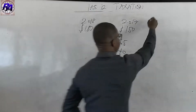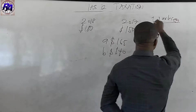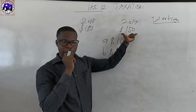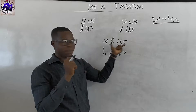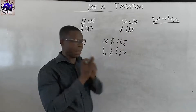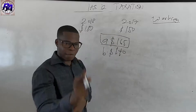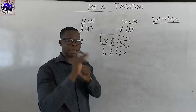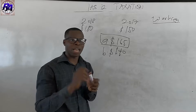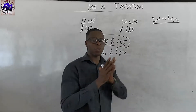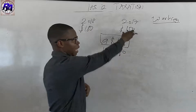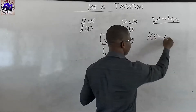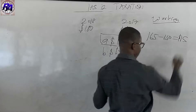Let's do our workings. We accounted for $150 tax in 2017, but what did we actually pay? $165. $150 is what we deducted as an expense, but $165 is what we actually paid. If that is the case, then we have under provided for tax — there was an under provision. Any time there is an under provision, we increase the new tax element with the difference. The difference is $165 minus $150, which gives us $15.